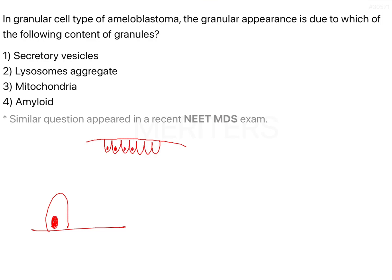Another situation where you see tall columnar cells with the nucleus placed away from the basement membrane is in OKC, which is now again considered to be a cyst. In the 2017 WHO classification — the latest classification on odontogenic tumours — OKC is classified as a cyst and also shows tall columnar cells with reversal of polarity, displaying ameloblast-like cells.